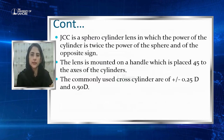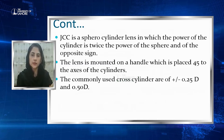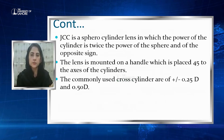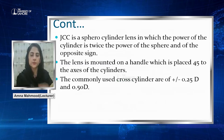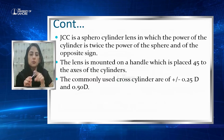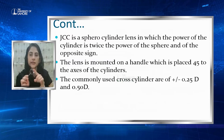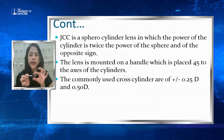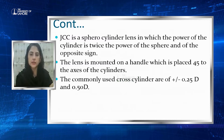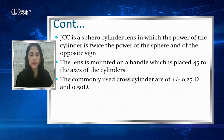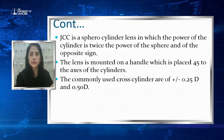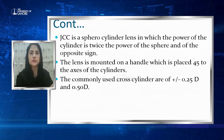The Cross Cylinder is a special cylindrical lens in which the power at the center is twice the power of each component and of the opposite sign. The lens is mounted on a handle placed at 45 degrees to the axis. So, minus is at 90 degrees, plus is at 180 degrees, and the handle is at 45 degrees. The commonly used cross cylinders are plus/minus 0.25 diopters and plus/minus 0.5 diopters.